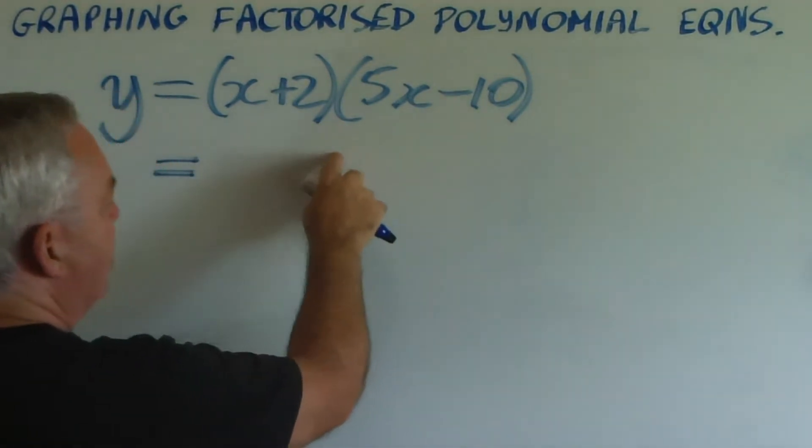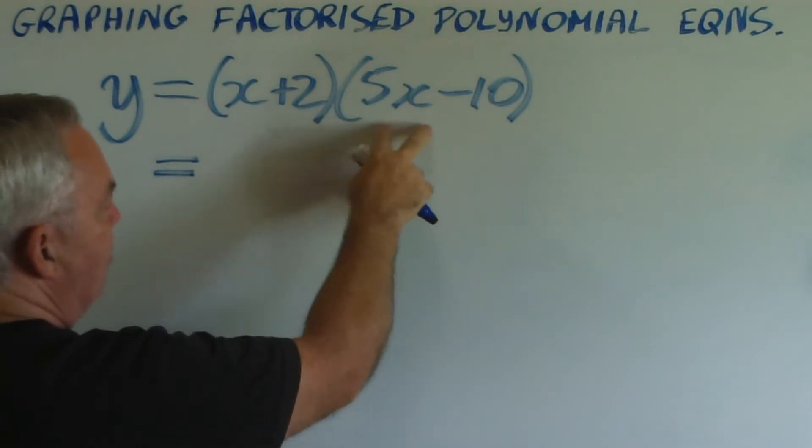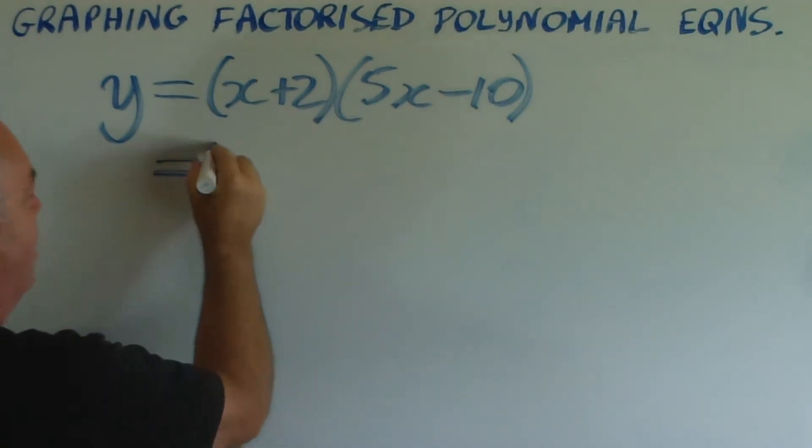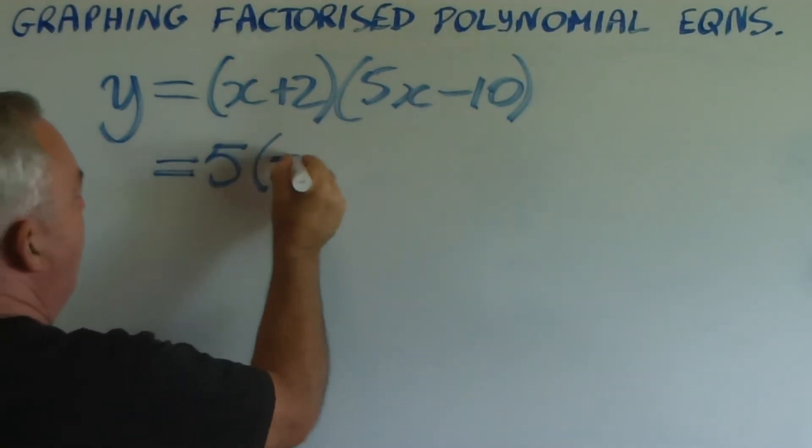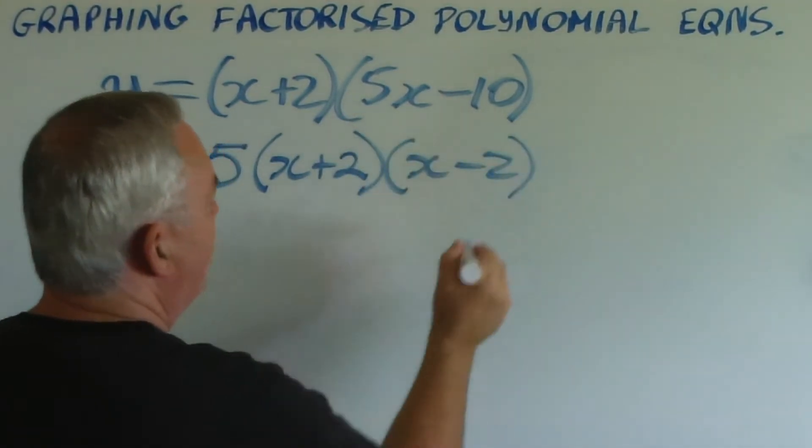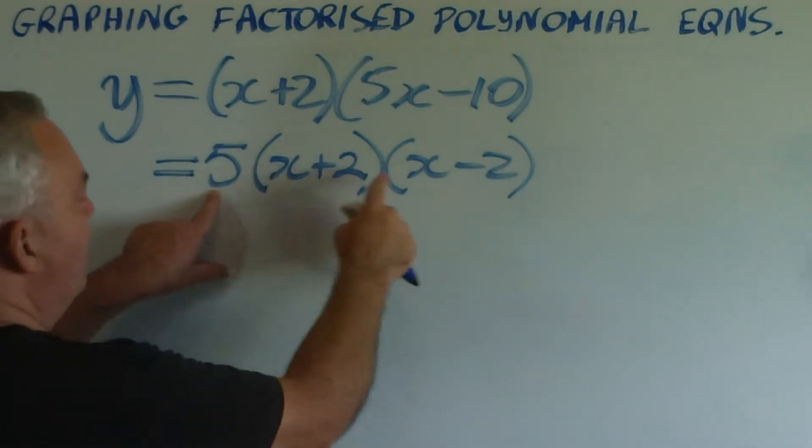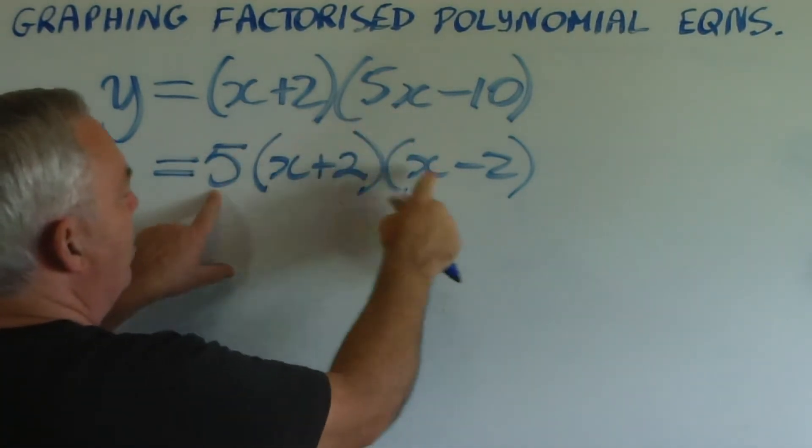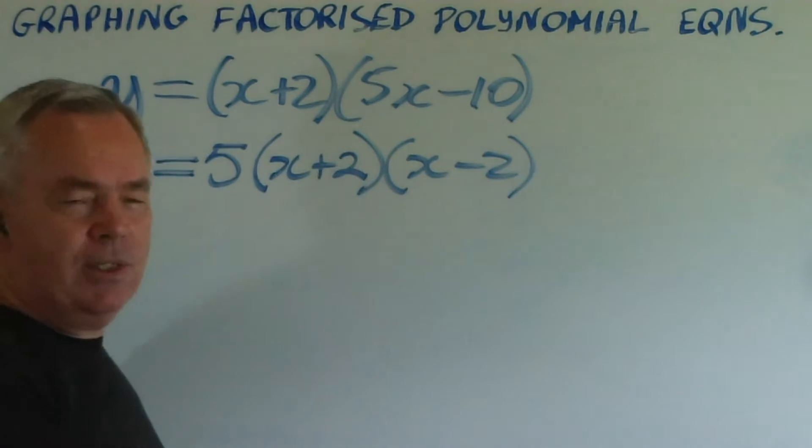I hope you don't mind, instead of putting it in front of this factor here, I'm going to take it right to the front. And we get this factorization, where five times x gives 5x, and five times minus two gives minus ten.